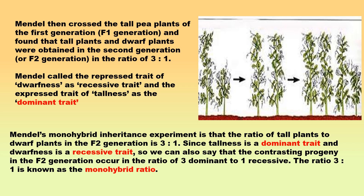Mendel called the repressed trait of dwarfness as the recessive trait, and the expressed trait of tallness as the dominant trait. Mendel also noted that all the pea plants produced from the hybrid tall parents of F1 generation were either tall or dwarf. There were no plants with intermediate height in between the tall and dwarf plants.